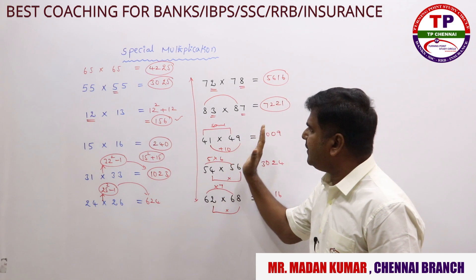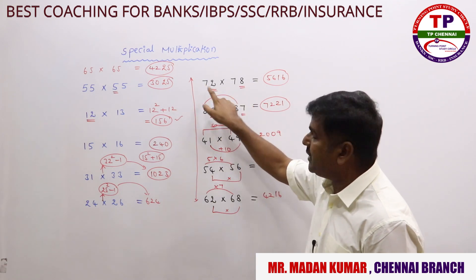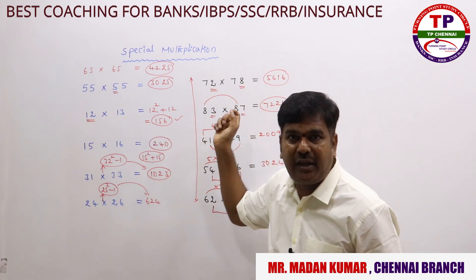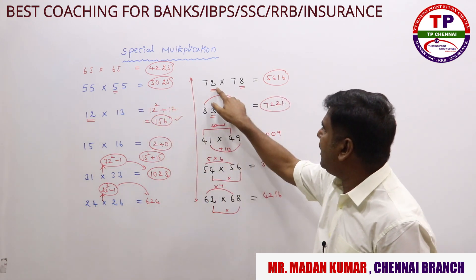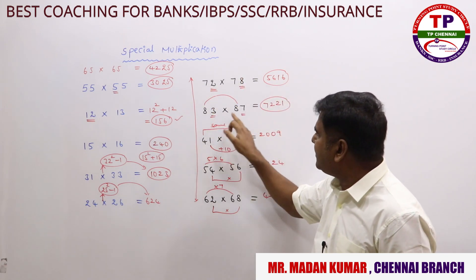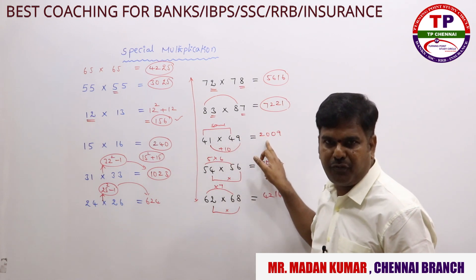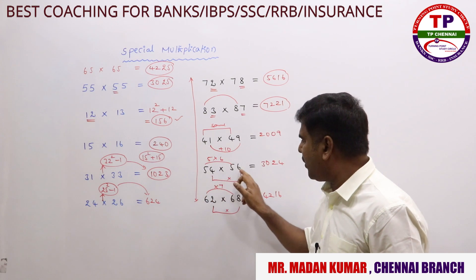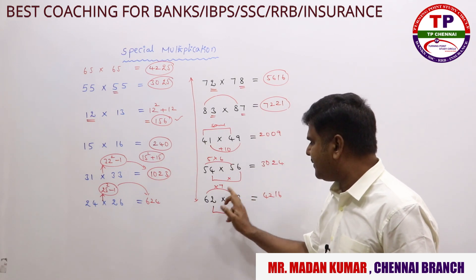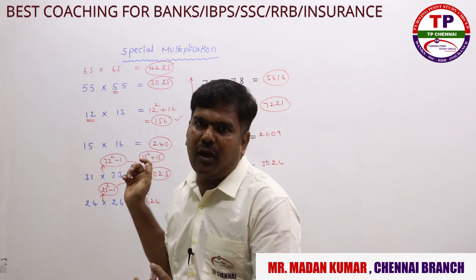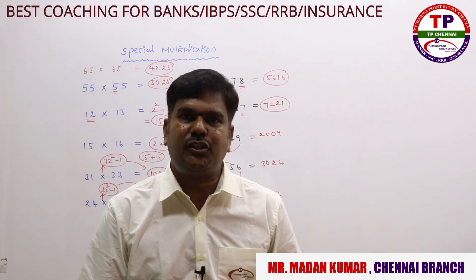For the pattern where first digits are same and unit digits sum to 10, apply the same rule as squares ending in 5: multiply unit digits for the last two digits, and multiply the common first digit by the next consecutive digit. Examples: 72×78 = 5616, 83×87 = 7221, 41×49 = 2009, 54×56 = 3024, 62×68 = 4216. We'll go ahead with more shortcut methods in the next session. Thank you — please subscribe to TP Chennai.